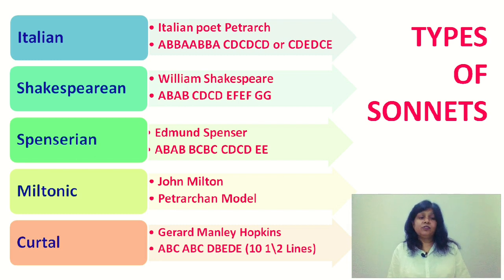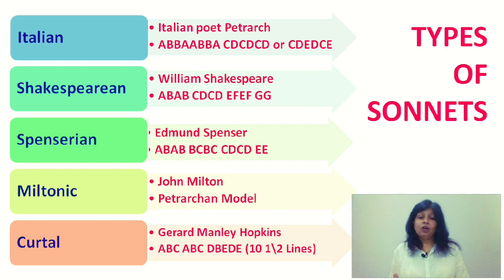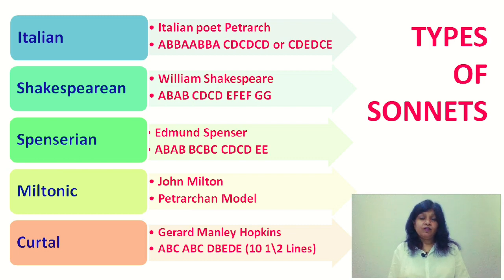Next are the curtal sonnets. These are sonnets written in 10 and a half lines, not 14 lines. Earlier, Shakespeare, Italian sonnets, Spenser, Milton, and even Wordsworth — who wrote 'The World Is Too Much with Us' — wrote sonnets in 14 lines. But curtal sonnets, popularized by G.M. Hopkins, were written in 10 and a half lines with the rhyme scheme A, B, C, A, B, C, D, B, E, D, E, and then one half line.